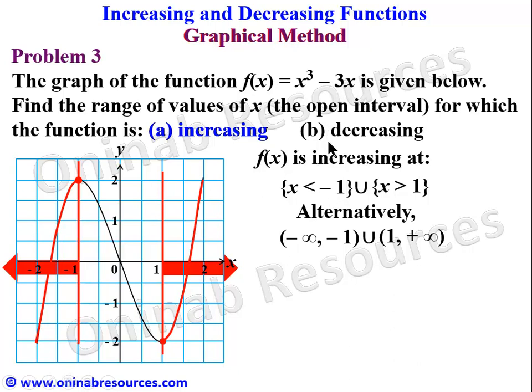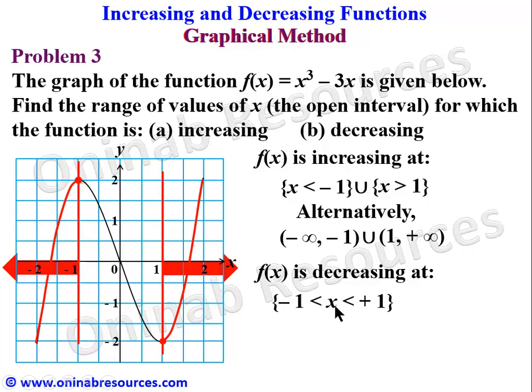For the decreasing interval: since the function is increasing on (-∞, -1) and on (1, +∞), the remaining interval is where the function is decreasing. We state: f(x) is decreasing at -1 < x < 1, or as an open interval: (-1, 1). We have succeeded in giving the intervals for which f(x) = x³ - 3x is increasing and decreasing. This is the end of the tutorial. Please check the description section for the calculus method of increasing and decreasing functions. Goodbye!